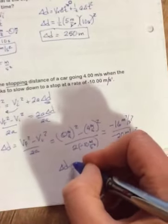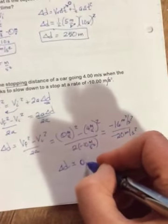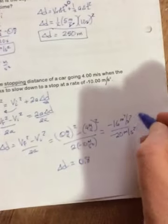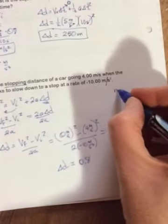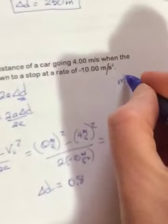So the two negatives will give us a positive. 16 over 20 will be 0.8. And then meters squared, meters squared,